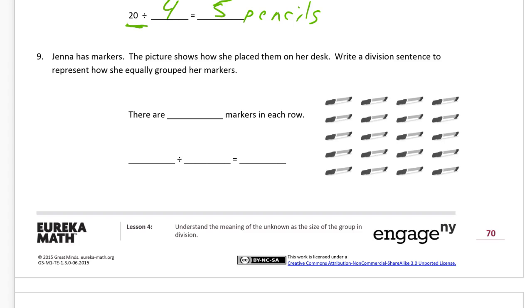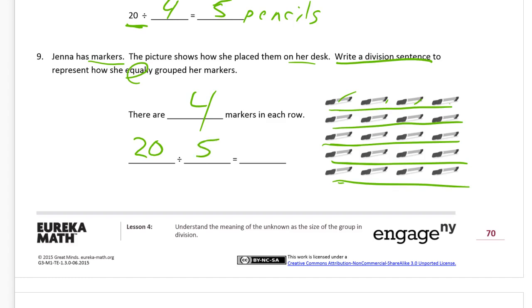And then our last one, number nine. Jenna has markers. The picture shows how she placed them on her desk. We're going to write a division sentence to represent how she equally grouped her markers. And we look at this array, it's got, I'm just going to underline the rows here. One, two, five rows. So how many markers are in each row? There's one, two, three, four markers in each row. There's five rows. We could count them all. That means there's just going to be 20 markers divided into one, two, three, four, five rows equals four markers in each row. And that's it, we're done.